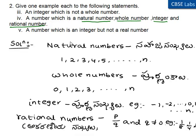In this question, we need to find a number which is a natural number, whole number, integer, and rational number. One example is a positive number like 5, 6, or 7. For instance, 5 is a natural number, whole number, integer, and rational number.